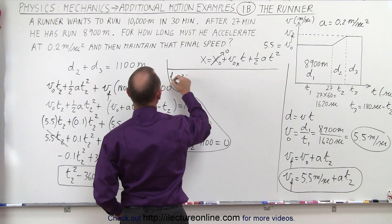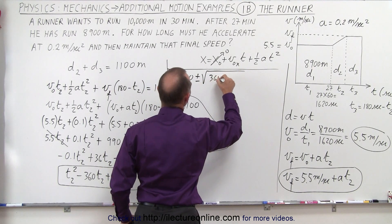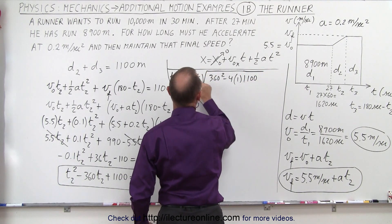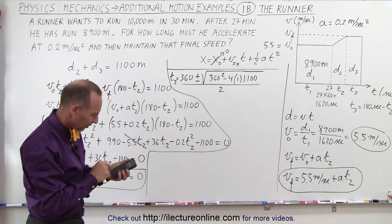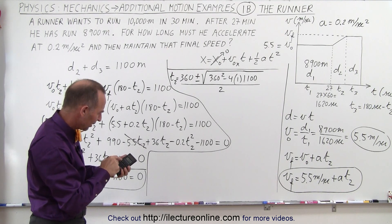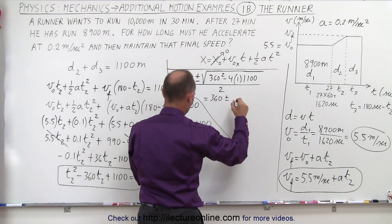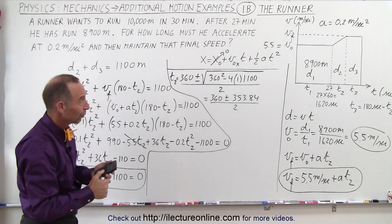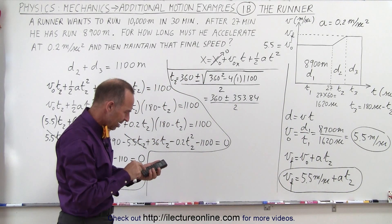We have t2 is equal to 360, that would be the negative of the middle term, plus or minus the square root of 360 squared minus 4 times a, which is 1, times c, which is a positive 1100, and the whole thing divided by twice a, which is 2. Notice here that if we get a negative number here, we probably did something wrong. So let's take 360 squared minus 4400. And that's a positive number, so we're in good shape. Take the square root. We get 353.84. So this is equal to 360 plus or minus 353.84 divided by 2.